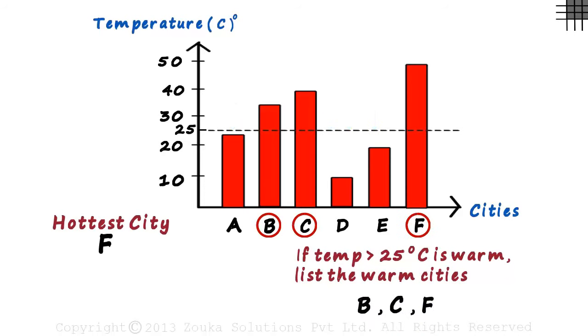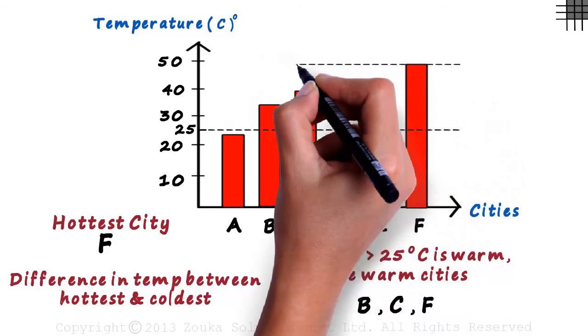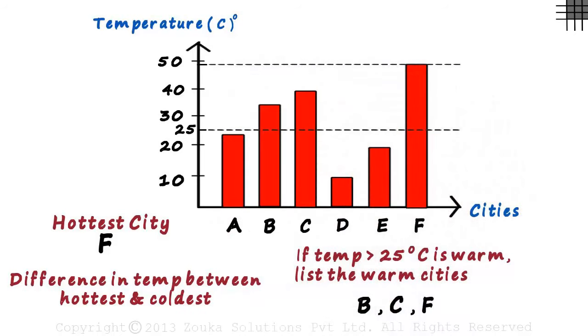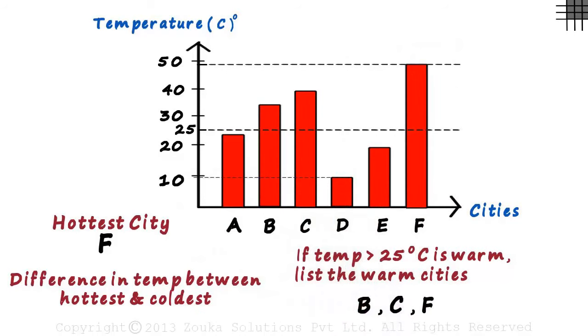Here's the last one. What is the difference in temperatures between the hottest and the coldest cities? The temperature of the hottest city is approximately 48 degrees Celsius, and the temperature of the coldest city is around 9 degrees Celsius. So the answer is 48 minus 9 which equals 39 degrees Celsius.